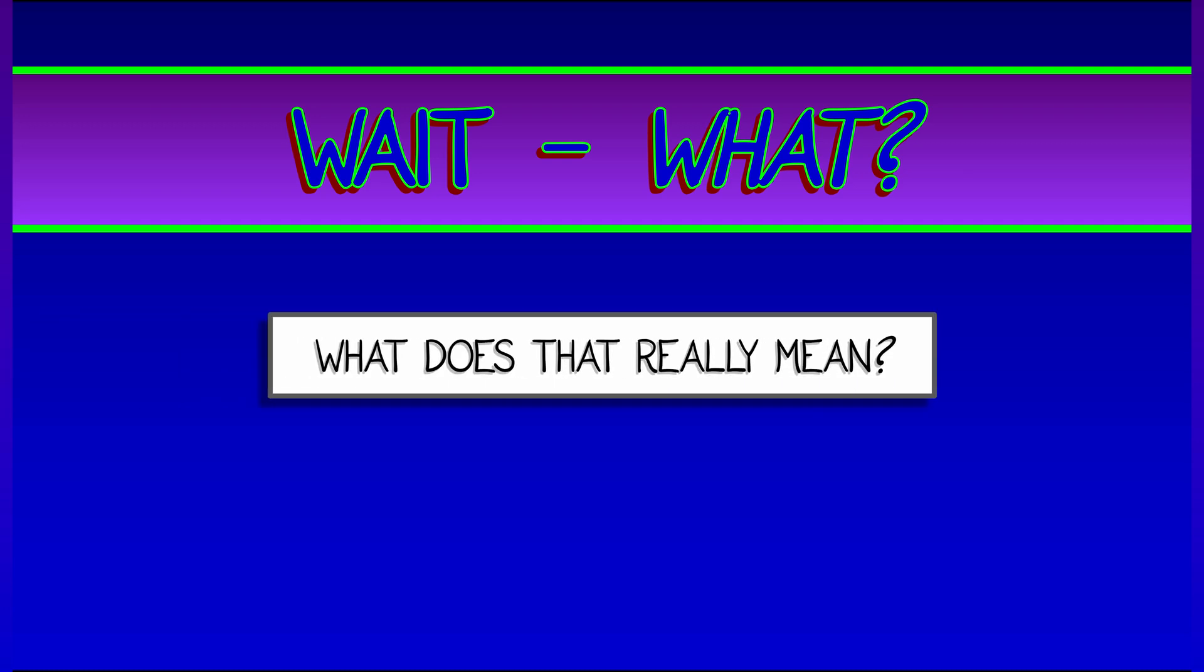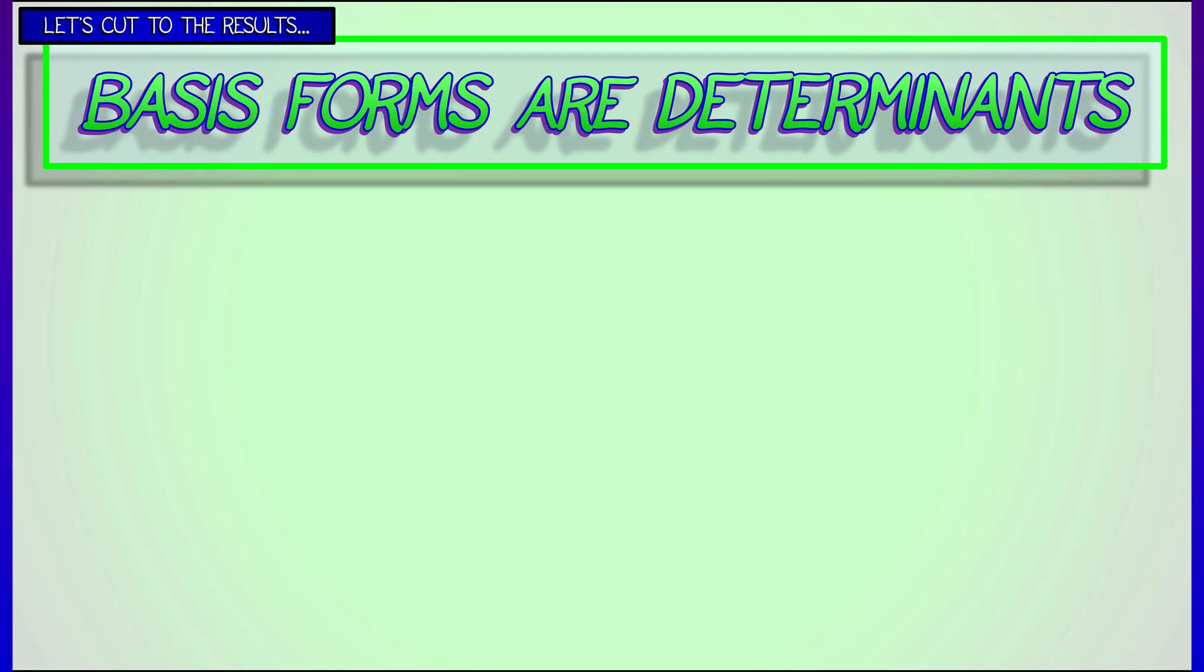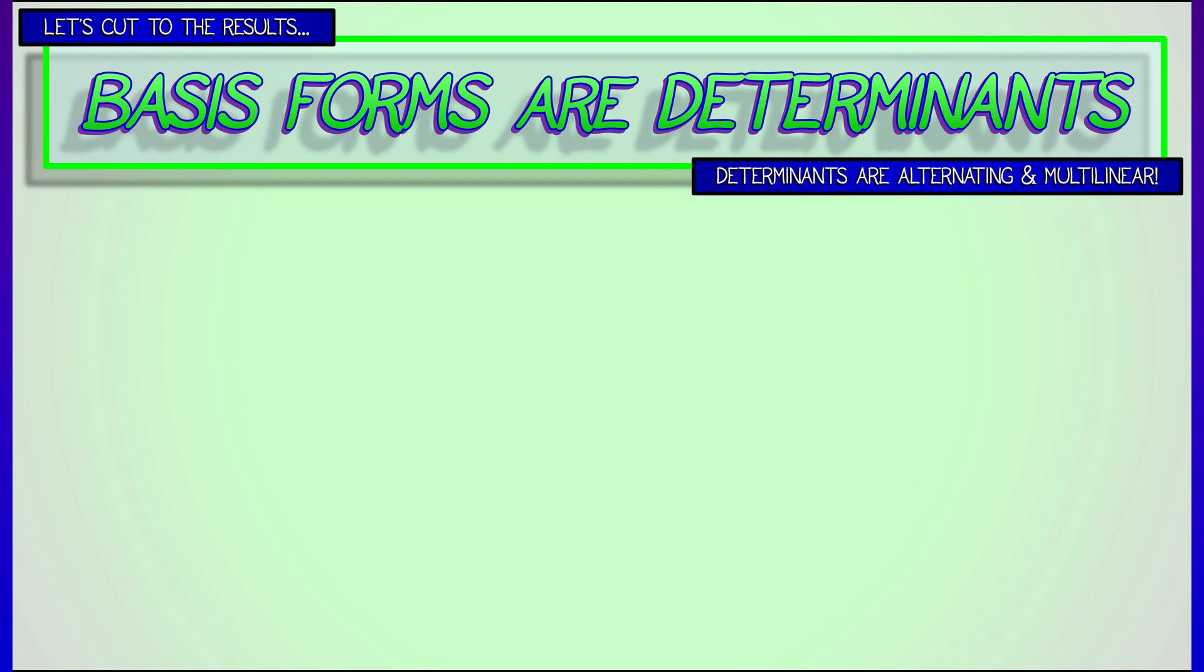Now, what does this even mean? I mean, that's kind of an abstract definition, right? But like any definition in mathematics, there's an intuition behind it. And in this case, the intuition is really pretty familiar because basis k-forms are really determinants. Determinants are the thing in mathematics that are both alternating and multilinear.